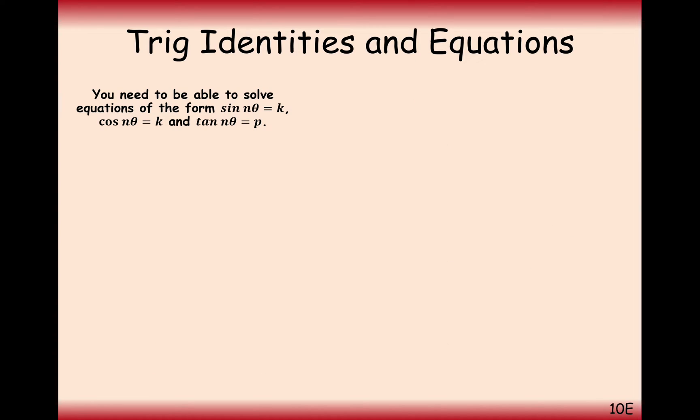Let's have a look at the first equation. What we're going to be looking at is when we have something inside the bracket with the theta on the sine, cos, or tan value. We're going to solve the equation cos 2θ equals minus 1 in between theta is 0 to 360.